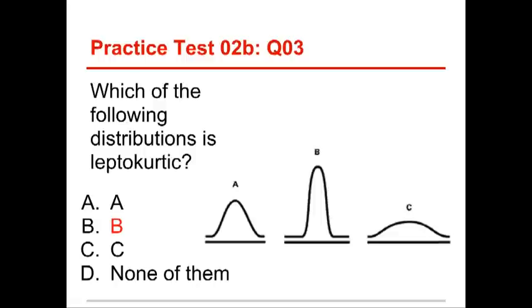The one on the left, A, is mesokurtic or middle bulge. And that's a normal distribution. The one on the right, option C, is platykurtic, which is like a platypus tail. And it's flat, flat bulge. So the answer for this one is B is leptokurtic.